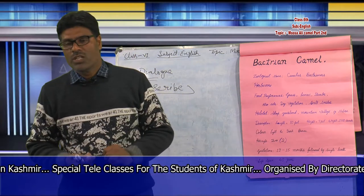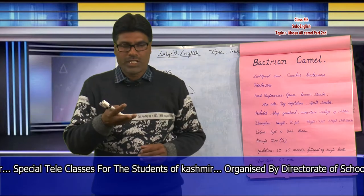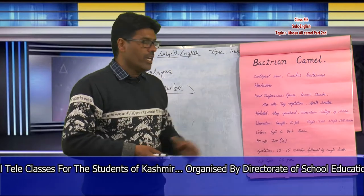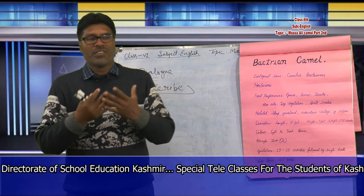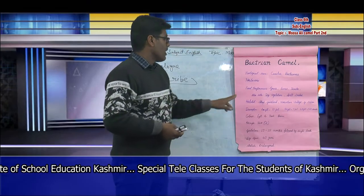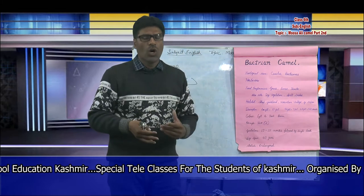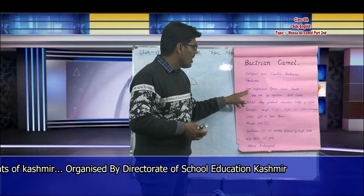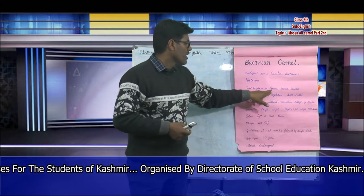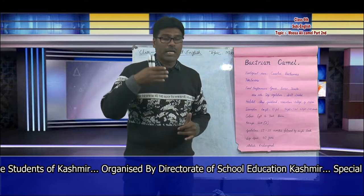The Bactrian camel is a herbivore. Students, you have already learned about three types of animals based on their food habits: herbivore, carnivore, and omnivore. When we say an animal is a herbivore, it means it feeds only on vegetation — green grass, leaves, and other plant matter. Food preferences: this Bactrian camel prefers to eat grass, leaves, and shrubs. But it can also eat dry vegetation and salt bushes — very harsh bushes that only camels can eat.